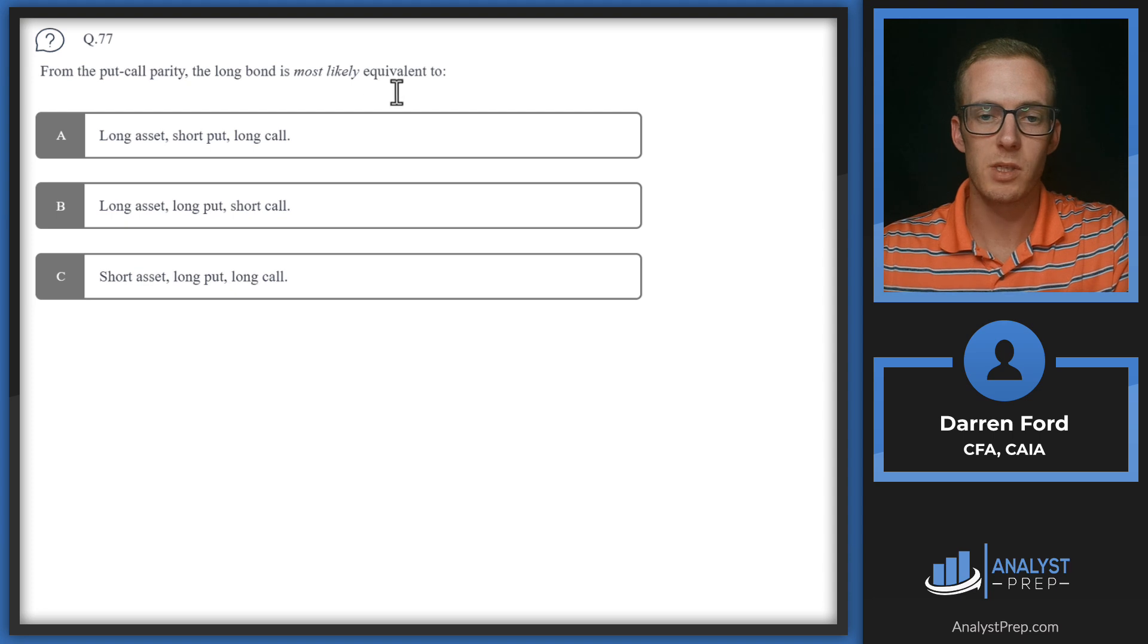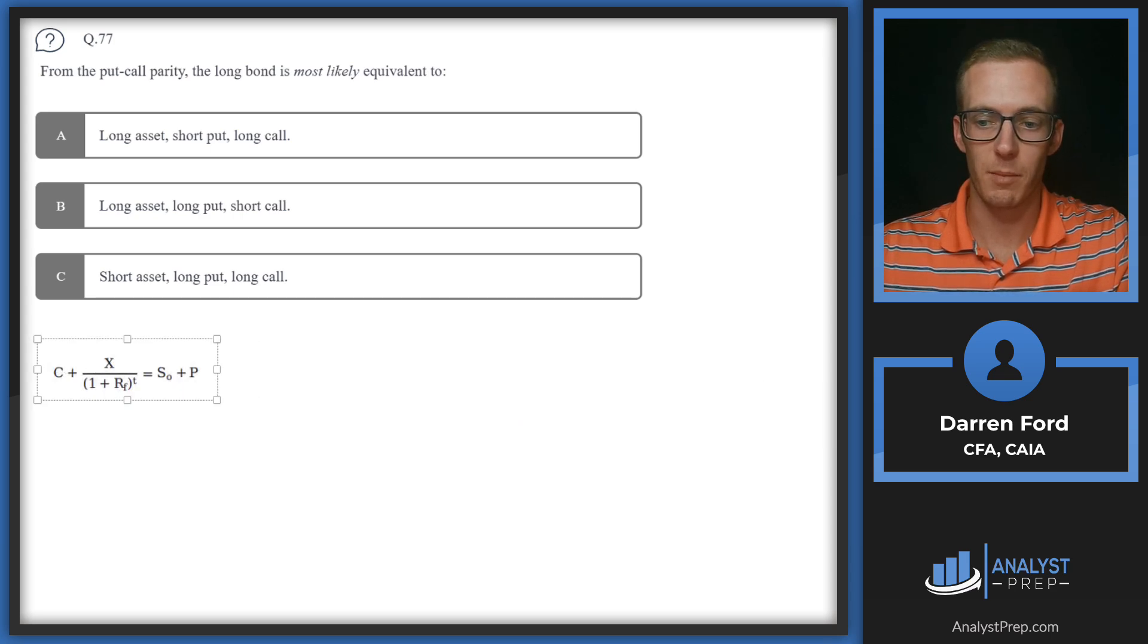Question 77: From the put-call parity, the long bond is most likely equivalent to what? We've got long asset with different combinations of long or short asset, long or short put, or long or short call. We just need to use our formula here and solve for the bond in order to figure this out.